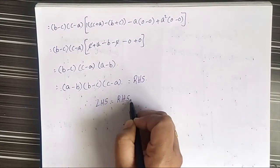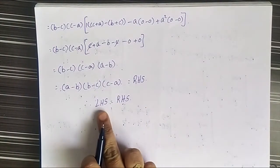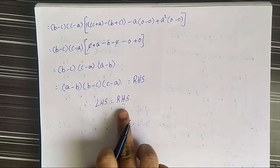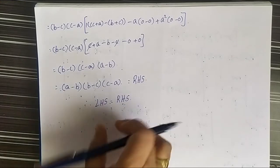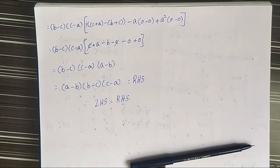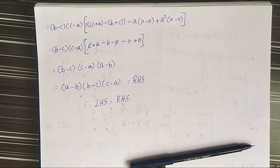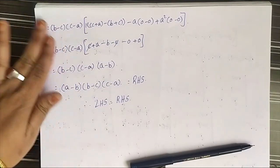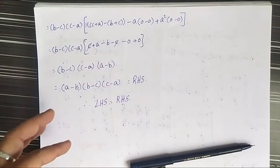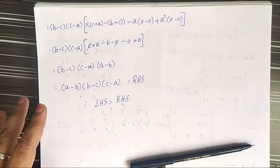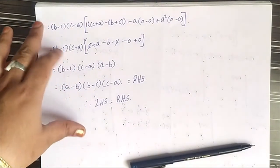Therefore LHS equals RHS. In this problem, by using the LHS value we can easily derive the RHS. The LHS and RHS values are equal to each other, hence proved. The first problem is proved. Next we will go to the next problems in the next video.